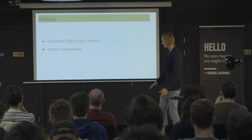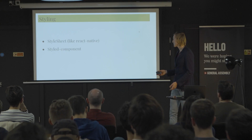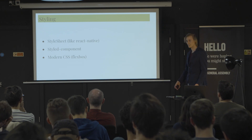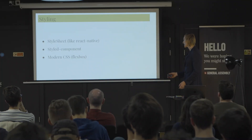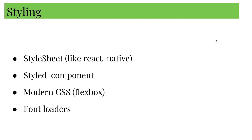Speaking of which, for styling it's exactly the same case — there are StyleSheets like in React Native, and if you're more used to styled-components you can also use those. You can also use Flexbox, which uses really modern CSS properties that you can't use with most PDF generators. And there is a font loader which works locally and can also fetch fonts from a URL.